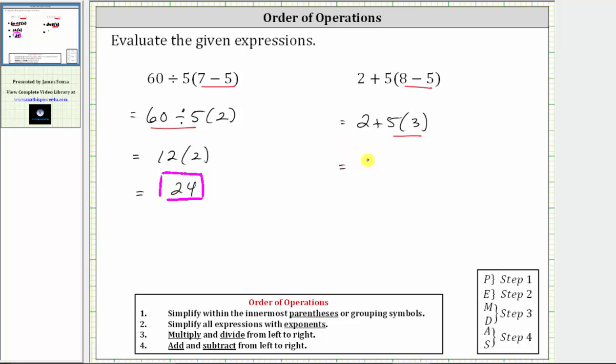The expression simplifies to two plus 15. And of course, the last step is to determine the sum. Two plus 15 equals 17.